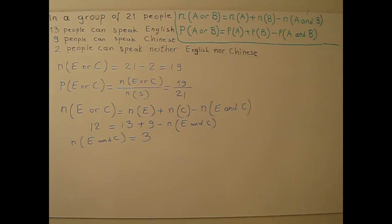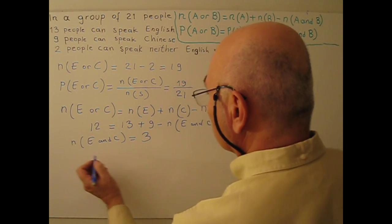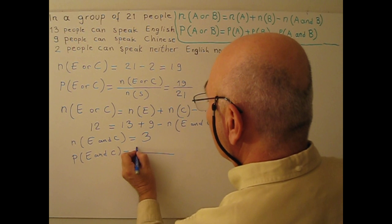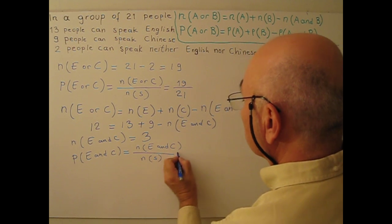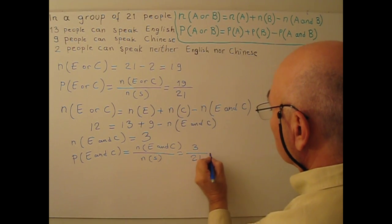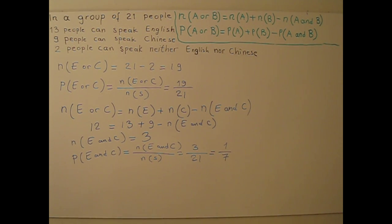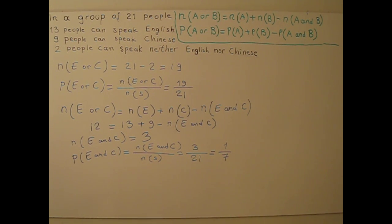Three people can speak both English and Chinese. What is the probability? P(E and C) = N(E and C) / N(S) = 3/21 = 1/7. So the probability that a person can speak both English and Chinese is 1 over 7.